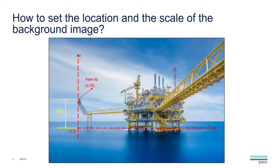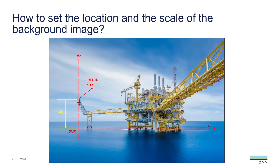How do you set the location and scale of the background image? We can set up a coordinate system on the image. The x-axis is the horizontal line along the wind direction at sea level. The y-axis is the vertical line along the central line of the flare stack. In this example, the distance from the flare tip to sea level is 75 meters, so the coordinates of the flare tip are (0, 75). If we set up this coordinate system correctly, we can get the location and scale of the image.